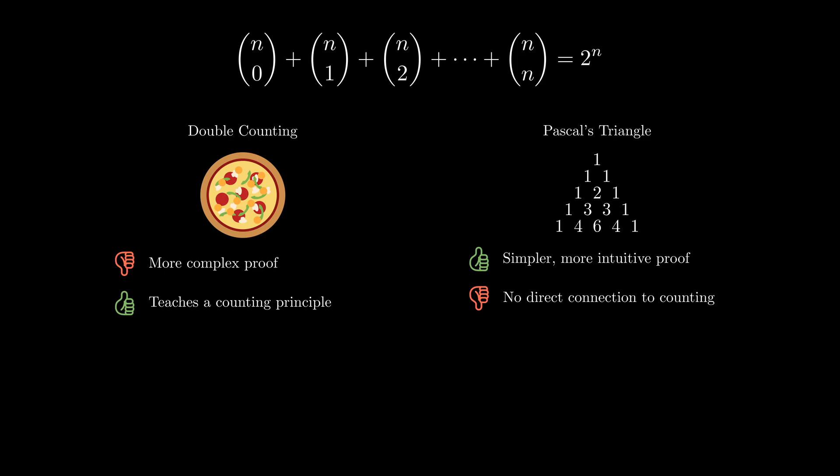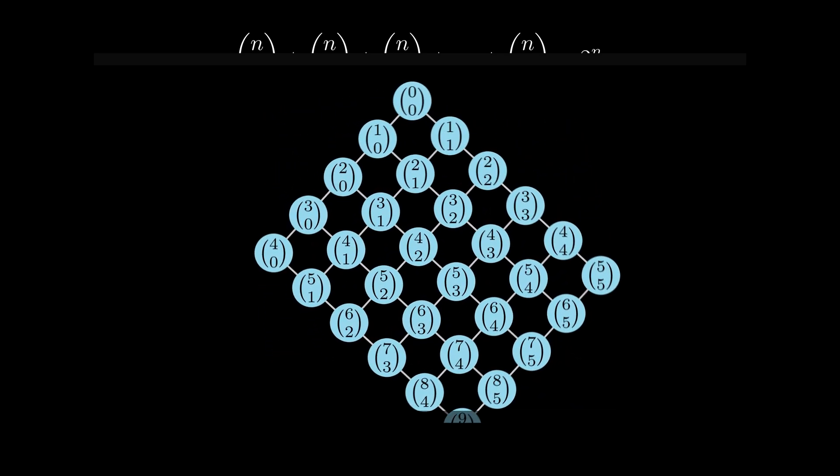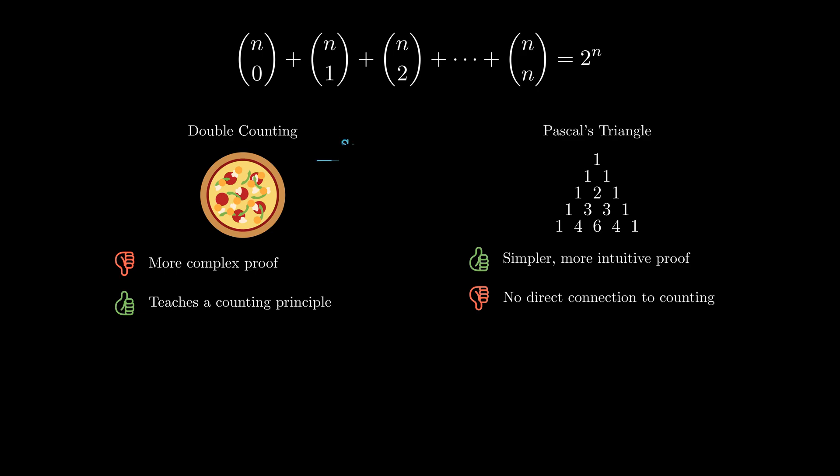This is why I demonstrated the counting proof first. I wanted you to develop an appreciation for this pattern's connection to counting before explaining why this proof is also significant. Despite not having an immediate connection to counting, we still understand that this all abstractly and loosely still relates to counting, because all the numbers in Pascal's triangle are still combination numbers. On top of trying to find a counting application to Pascal's triangle, we can also think of Pascal's triangle as a tool that helps us see these counting relationships more easily.